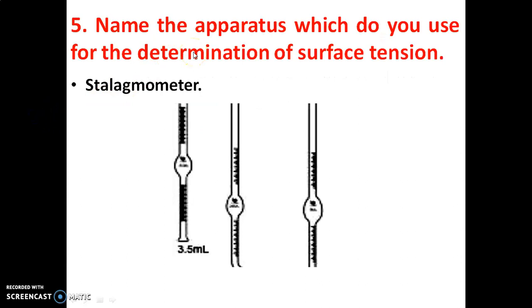Name the apparatus used for the determination of surface tension. We generally use a Stalagmometer. It is the apparatus used for the determination of surface tension.